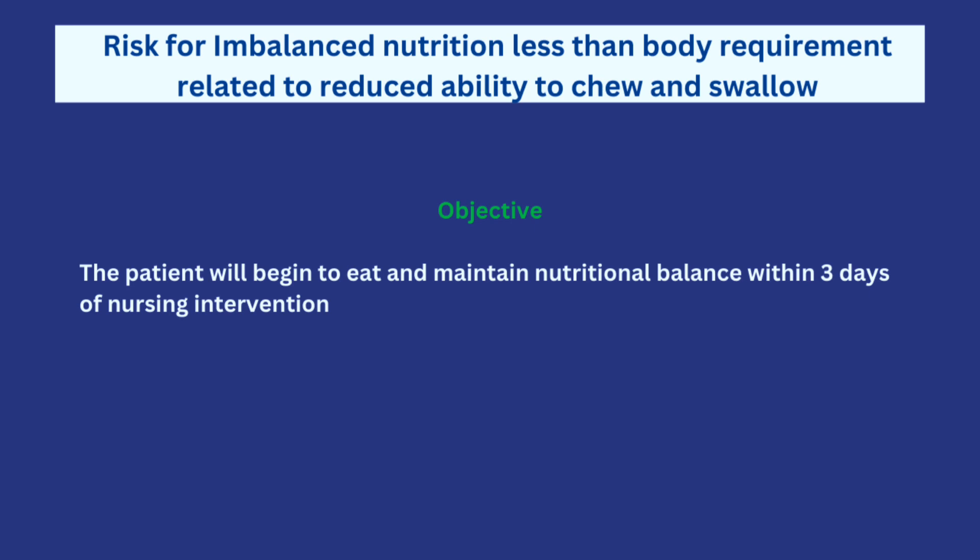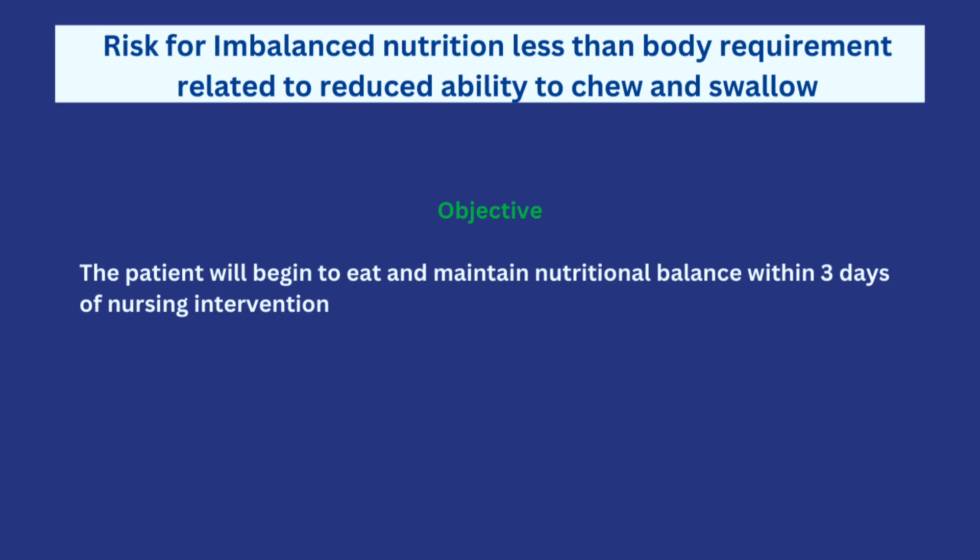The next nursing diagnosis is risk for imbalanced nutrition less than body requirements. The scenario pointed out that Mr. Ajao cannot chew and swallow easily, and we don't want a patient to become malnourished during or after admission. The objective is that the patient will begin to eat and maintain nutritional balance within three days of nursing intervention. The first intervention is to assess the extent of chewing and swallowing difficulty to obtain baseline data and determine the most appropriate management plan.